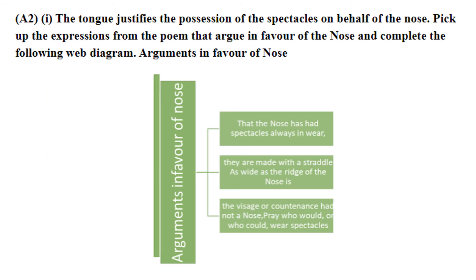The tongue, who was the lawyer, justifies the position of the spectacles on behalf of the nose. Pick out expressions from the poem that argue in favor of the nose to complete the web diagram. Arguments in favor of the nose: the nose has always worn spectacles; the spectacles are made with a straddle as wide as the ridge of the nose; and if the face had no nose, spectacles would be impossible and useless.